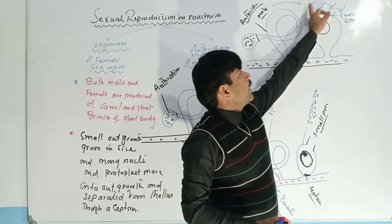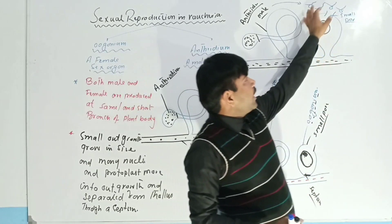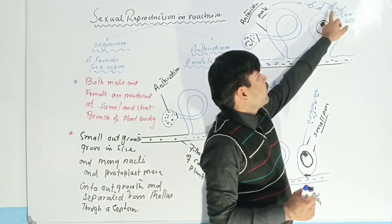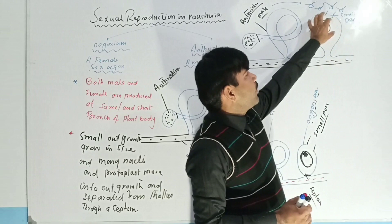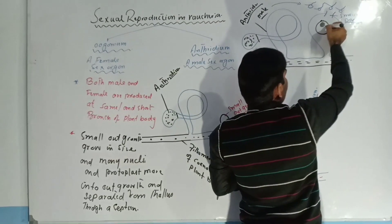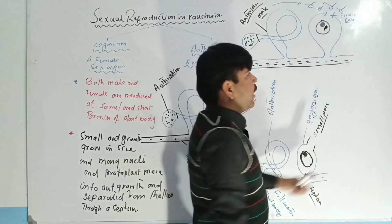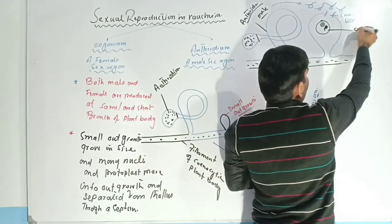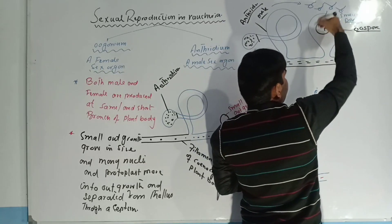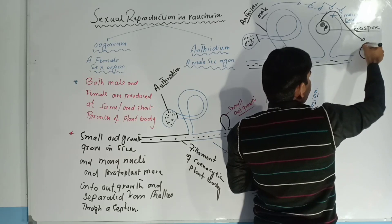Many antherozytes can enter through the pore, but only a single antherozyte can fertilize the oogonium. After fertilization it becomes a zygote, also known as the oospore. This fertilized oospore will come out from this plant body and become thick-walled.